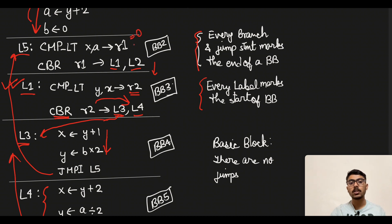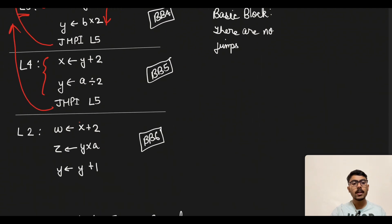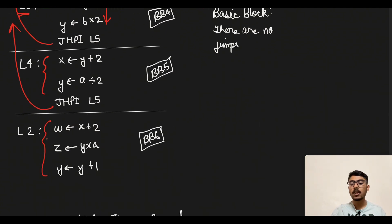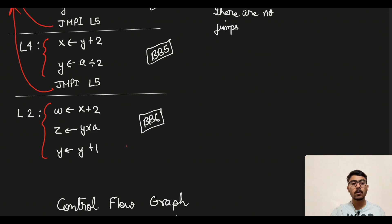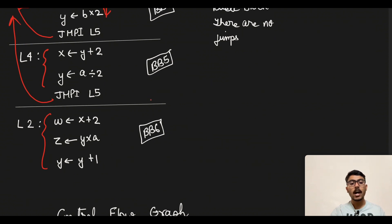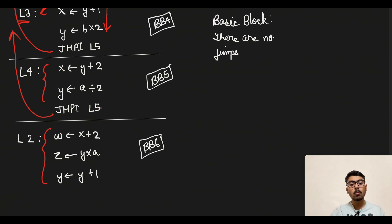Now suppose x becomes greater than a. Then r1 equals 0, and since r1 is 0 we go to L2. At L2 we execute the last part of our code: w gets the value x plus 2, z gets the value y multiplied by a, and y gets the value y plus 1. This basic block (BB6) will then be executed.